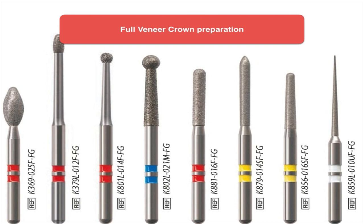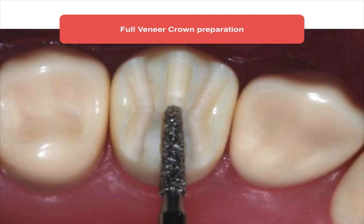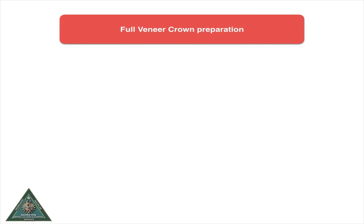A round bur is used to put your depth orientation grooves and potholes. Then you connect them with your straight fissure bur. The torpedo diamond in yellow bands gives you a nice chamfer finish, and the thin tapering diamond is for breaking the contacts. This is how the depth orientation groove would appear — you want to follow the contour shapes of the tooth.